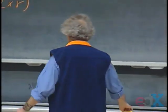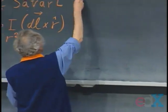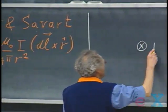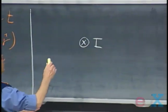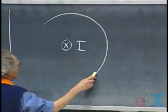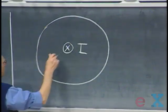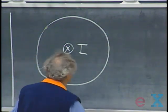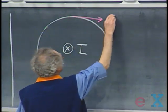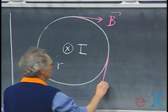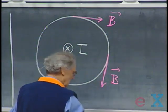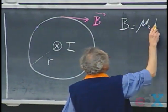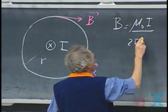We've seen last time that using Biot and Savart's formula, that if you have a current going straight into the blackboard, perpendicular to the blackboard, we get a magnetic field at a distance R. The magnetic field is tangential to the circle, and the strength of that magnetic field equals μ₀ times I divided by 2πR.